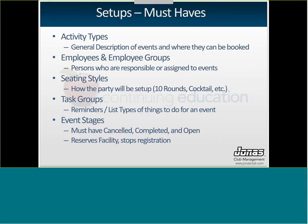Once you have those two things set up, go into the actual activity management module and start your setups there. Under event management, a couple of things are required. The first is an activity type — just a general description of events and where they can be booked. Typically clubs have an activity called Member Events and one called Private Parties or Banquet Functions. You also need employees and employee groups — employees are people that can be booked or assigned to events, so you'll set up employee profiles for all event coordinators and salespeople. Both activity types and employee groups are under the System Administration tab.